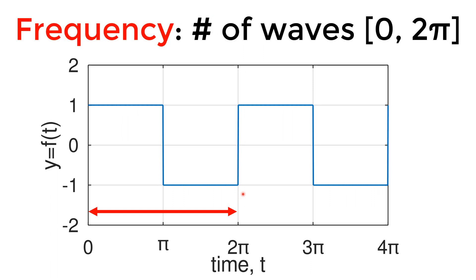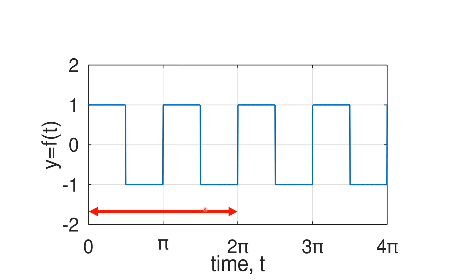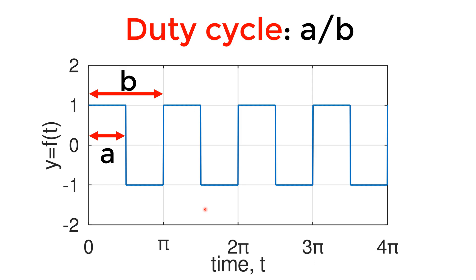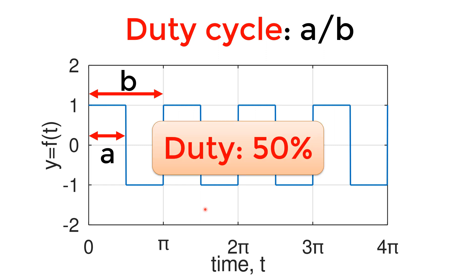Next is the frequency, or number of square waves between 0 and 2 pi. In this plot, you have one square wave between 0 and 2 pi, giving a frequency of 1. I use the variable f for the frequency. If you need to plot two square waves, you can use a frequency of 2, in other words f equal to 2. Lastly, we need a duty cycle. I use the variable name duty for the duty cycle.